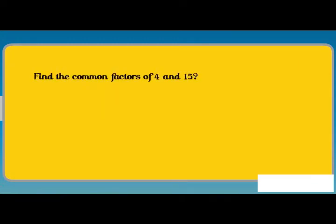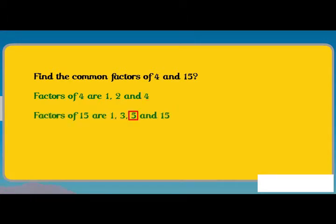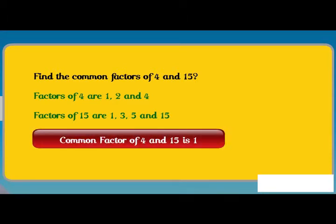Now, let us find the common factors of 4 and 15. The factors of 4 are 1, 2 and 4, whereas factors of 15 are 1, 3, 5 and 15. There is only one common factor of 4 and 15. That is 1.